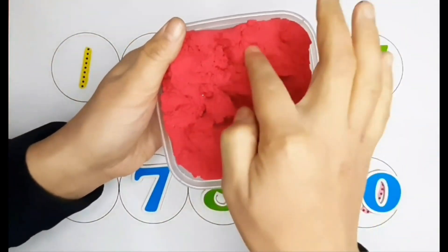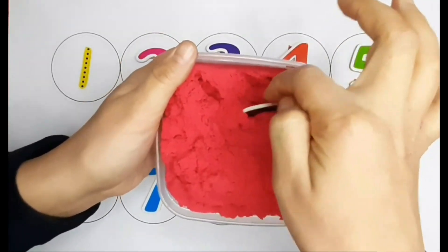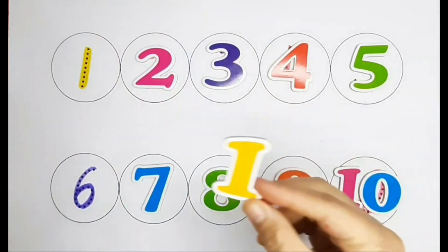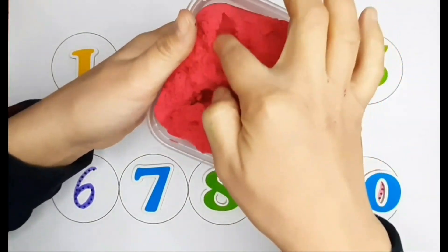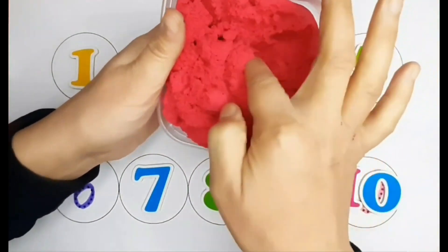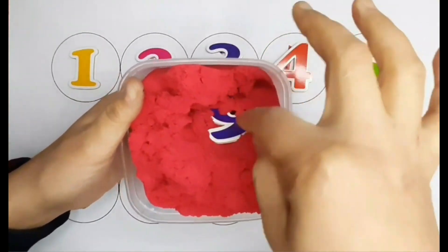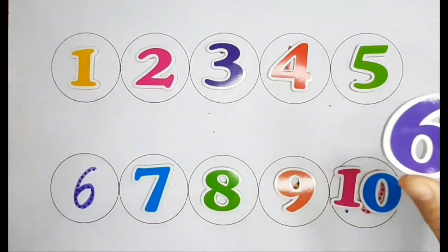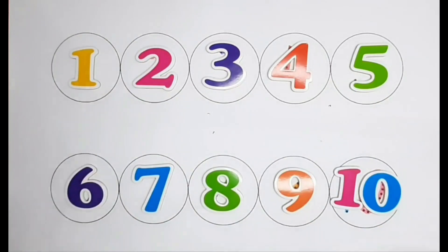Number one. One. That's right. There is only one number left. Do you know what it is? It's number 6. Yes, that's right. There it is. Thank you for helping me to find the numbers. Bye-bye.